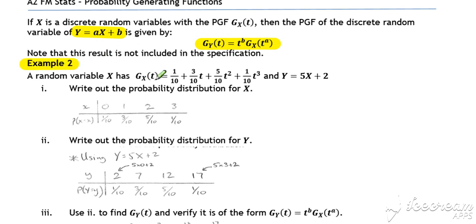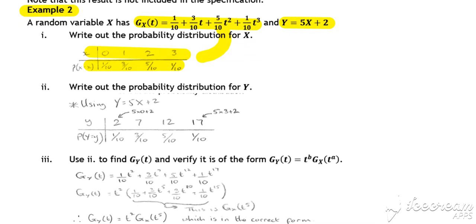So here's our probability generating function for X and Y is defined as 5X plus 2. The probability distribution for X is picked out from our probability generating function. We now write down the probability distribution for Y.